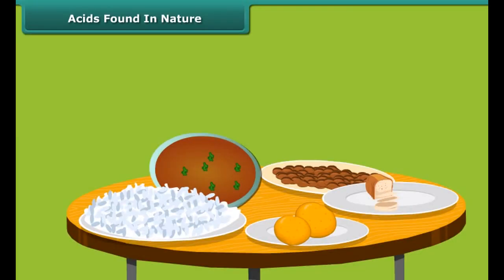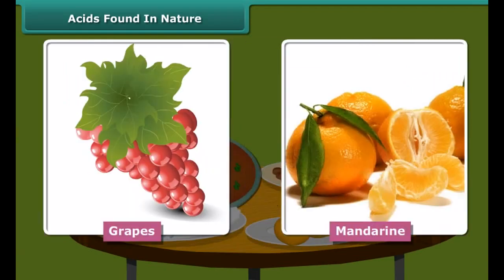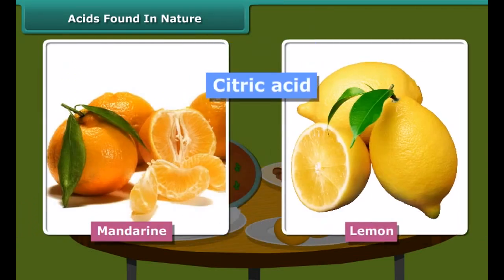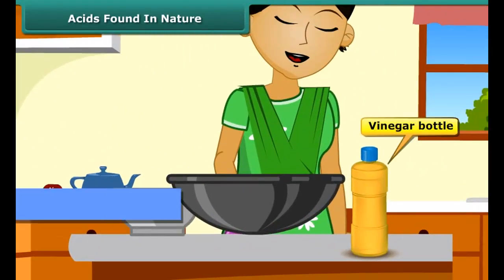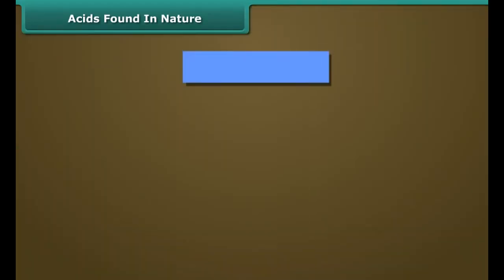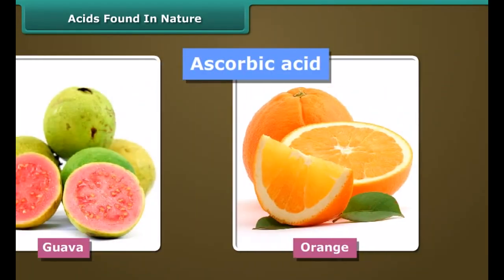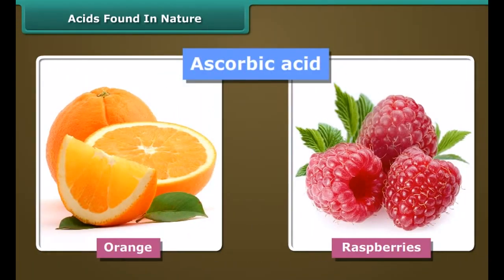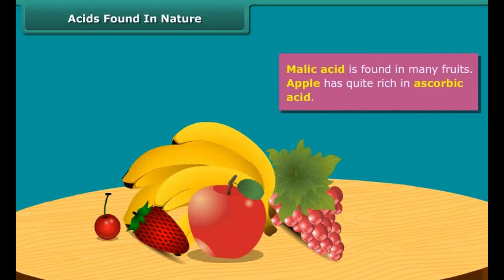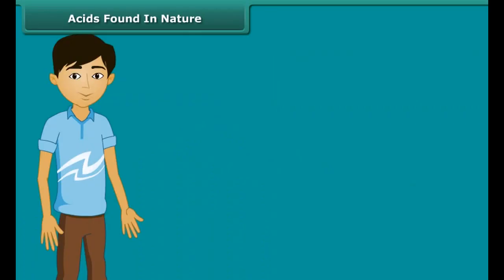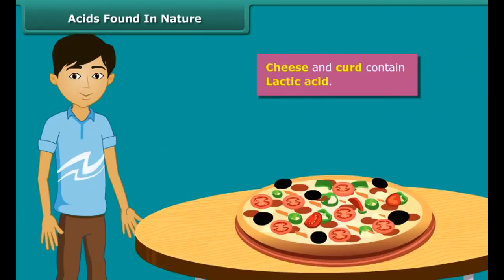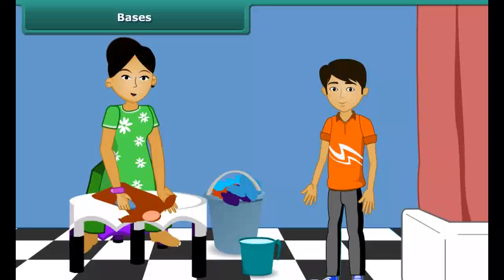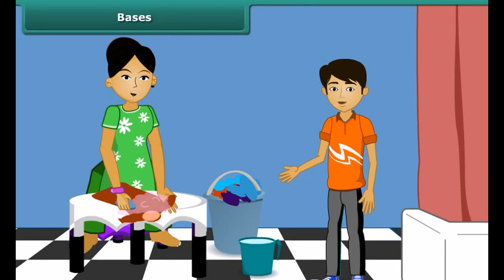Different food items contain different acids. Citrus fruits like orange, grapes, mandarin, and lemon contain citric acid. Vinegar found in our kitchen is dilute acetic acid. Ascorbic acid is found in guava, orange, and raspberries. Malic acid is found in many fruits. Apple is quite rich in malic acid. Cheese and curd contain lactic acid.